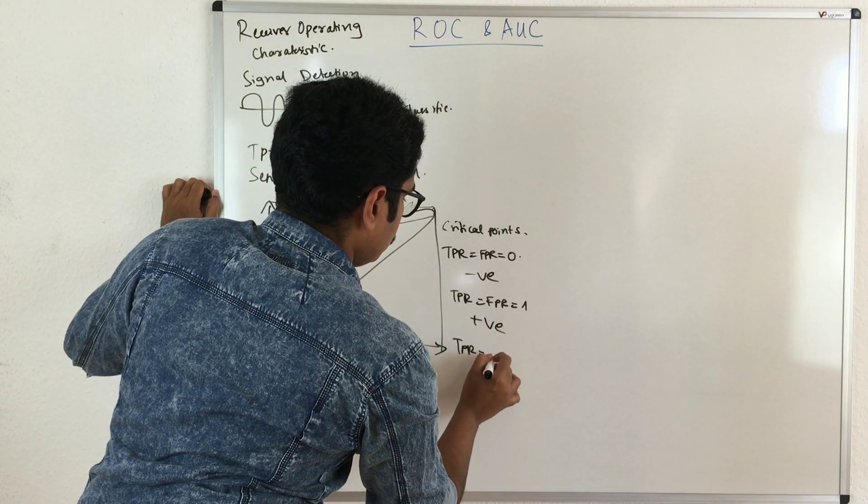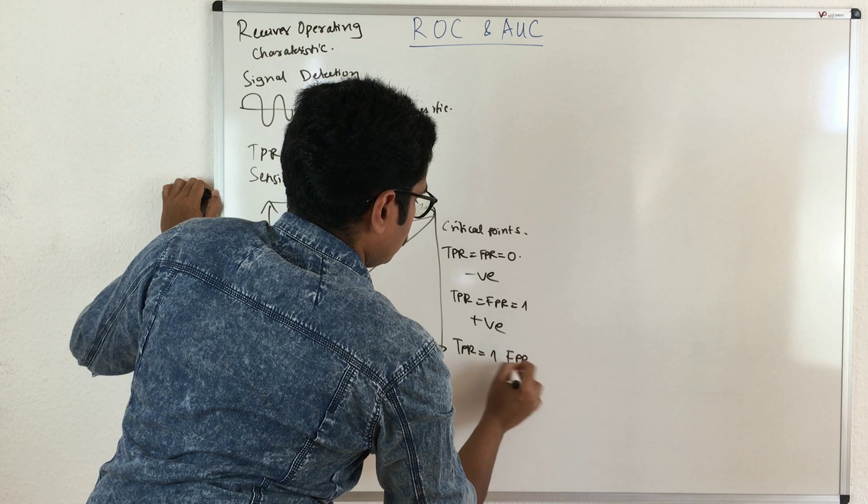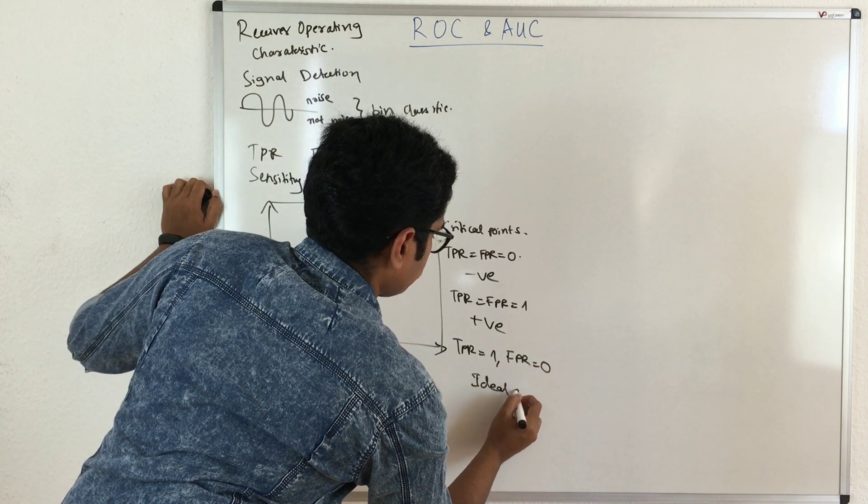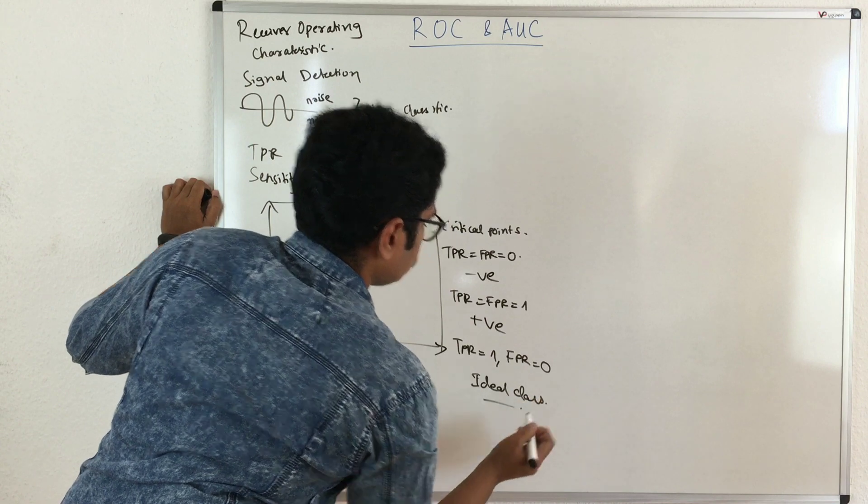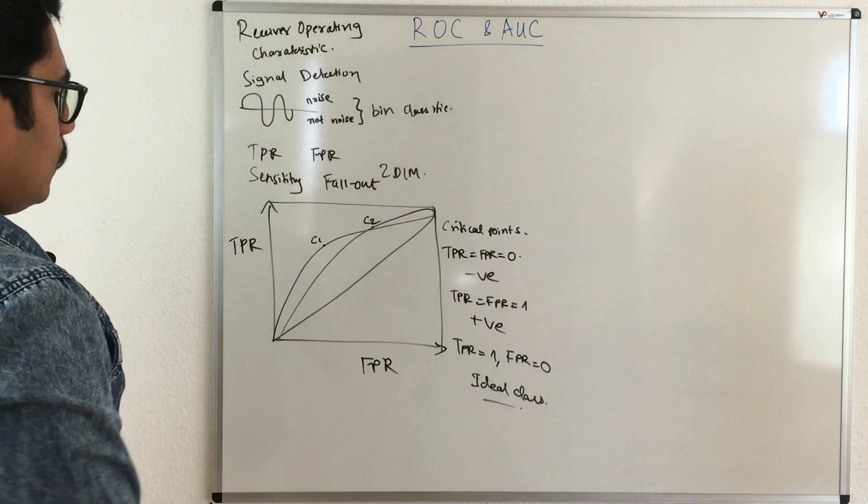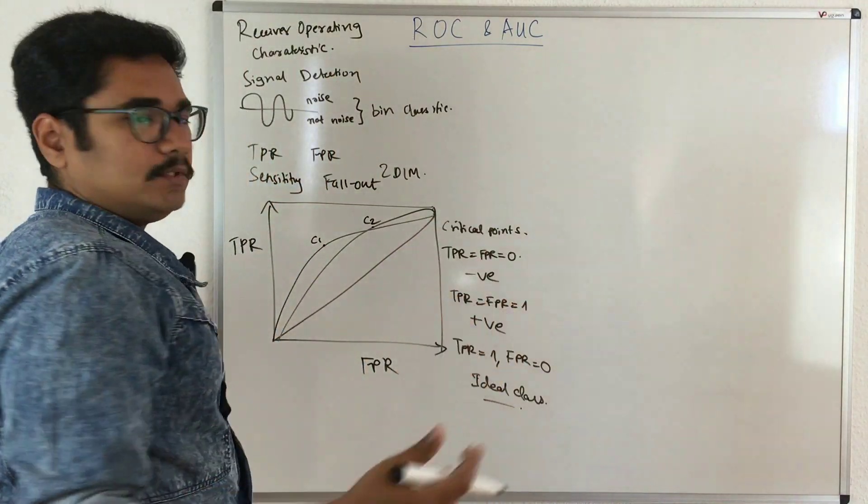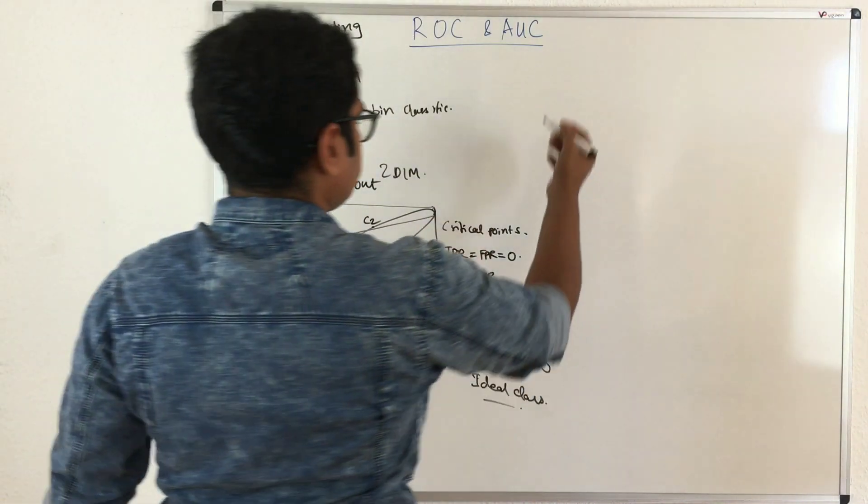If your TPR equals one and FPR equals zero, that means it's an ideal classifier. This is the condition for ideal class in ROC curves. Now let us move to constructing an ROC curve. We'll do some ROC baselines.